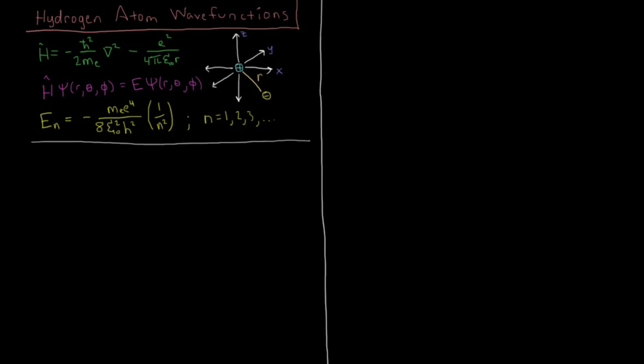In this video, we're going to look at the wave functions for the hydrogen atom. So we have our Hamiltonian, which was the kinetic energy of an electron, minus h-bar squared over 2 times mass of the electron, del squared, the Laplacian operator.